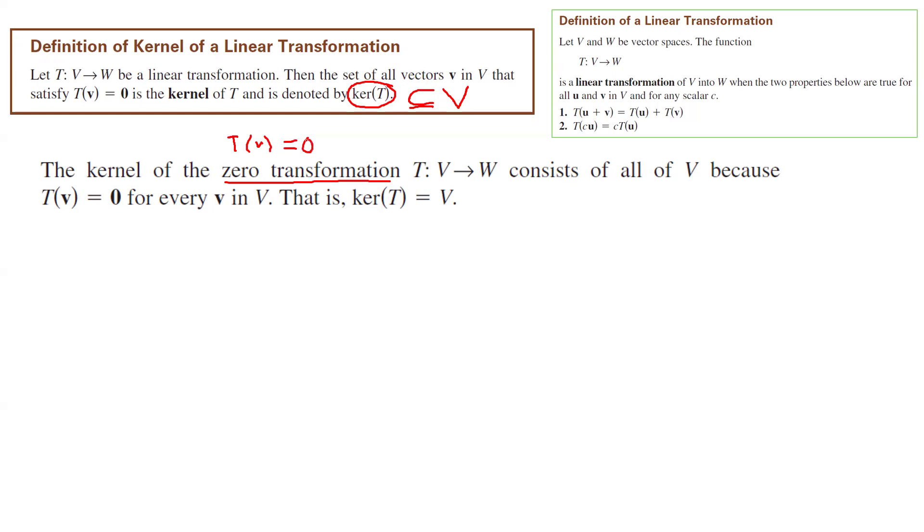So since the output is always zero, no matter which vector you take from V, the output is fixed and the output is zero. So the kernel of the zero transformation equals every single vector from the domain.